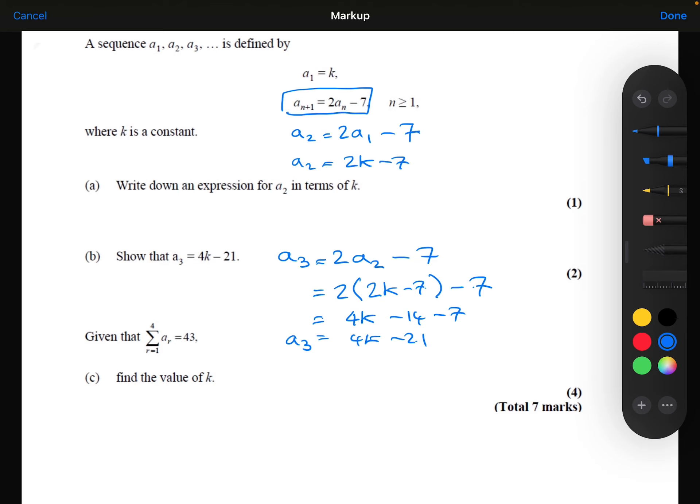And then we are told that the sum from 1 to 4 of aᵣ is equal to 43. So what this means is we're first going to substitute 1 into aᵣ, so that's a₁. Then we're going to substitute 2 in, so a₂. Then we're going to substitute 3 in, a₃. And then finally, the last number will be a₄. And then we're going to add those together, and we're told that equals 43.